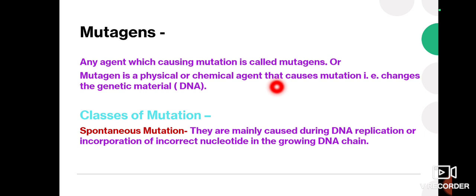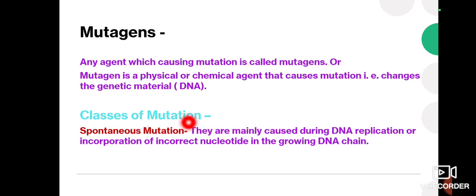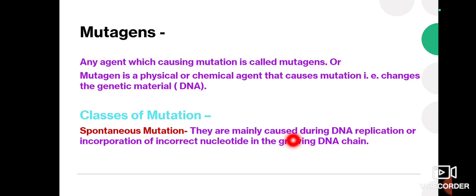There are classes of mutations based on these mutagens. The first one is spontaneous mutation, which is mainly caused during DNA replication or by incorporation of incorrect nucleotides in the growing DNA chain. These are naturally occurring mutations.